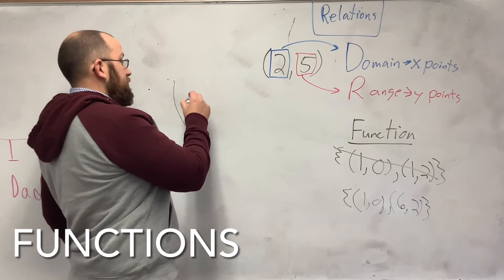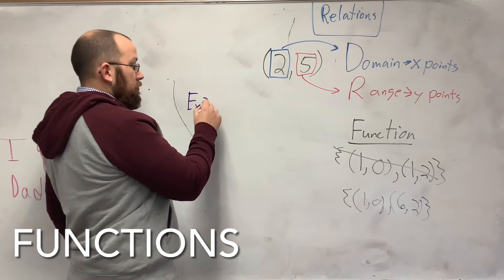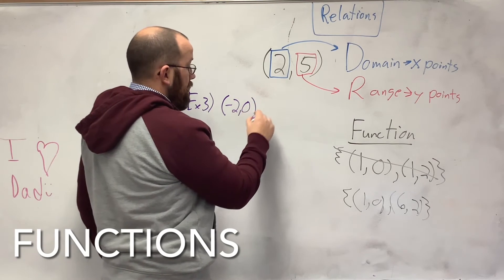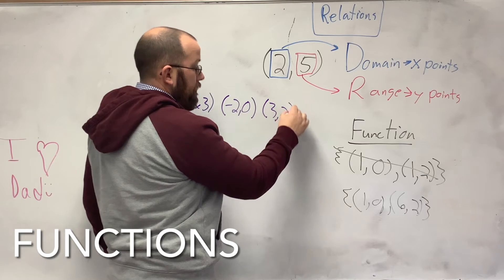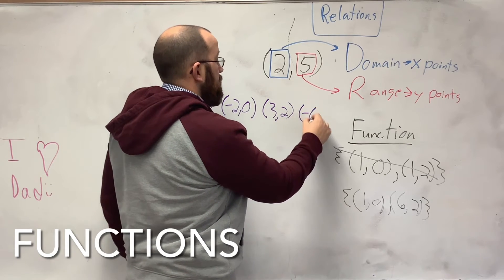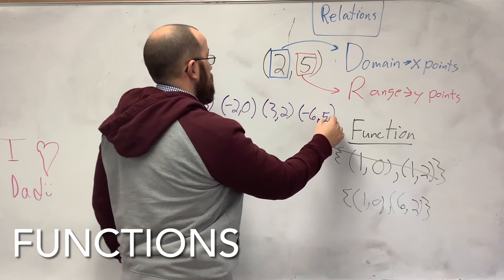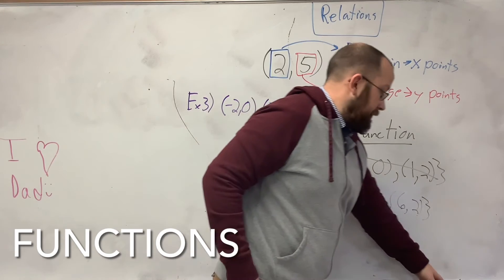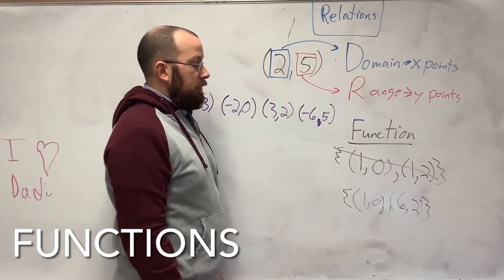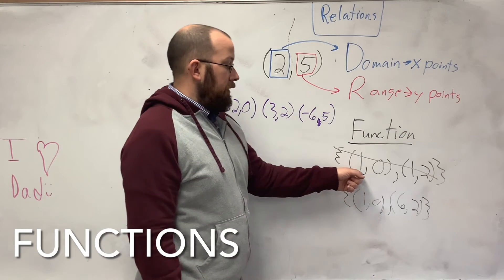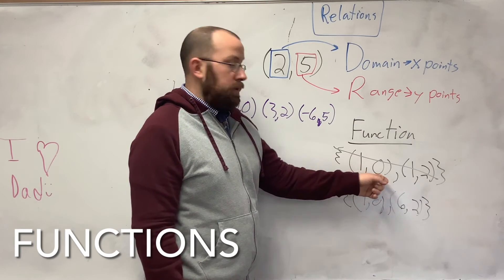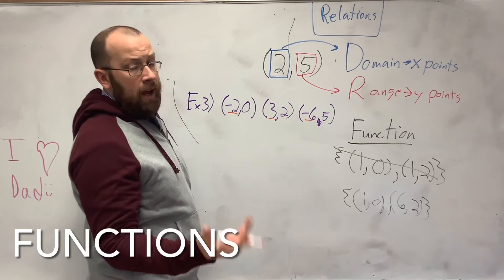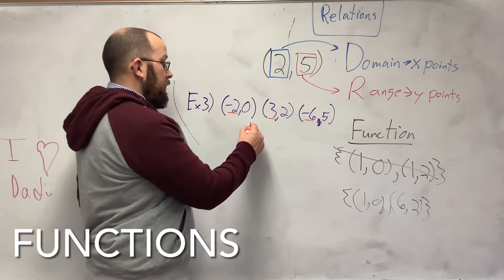So if I had the set of relations {(-2, 0), (3, 2), and (-6, 5)}, if you're asking if it's a function or not, what you're really asking is do any of the x's repeat? That's the first thing. Do I have exactly one x with one y? So you have to see if any of your x's repeat, and they do not. So this is automatically a function.